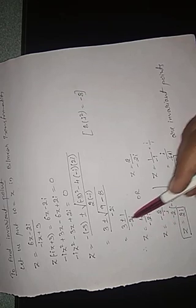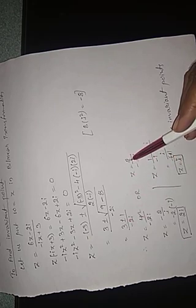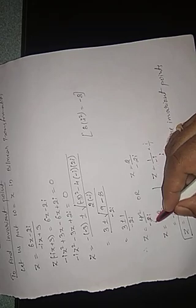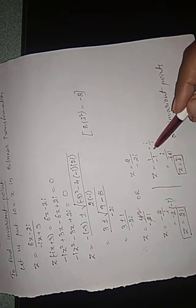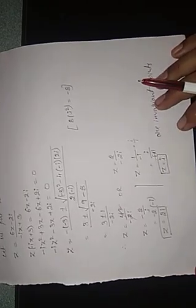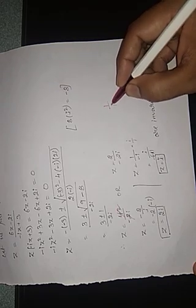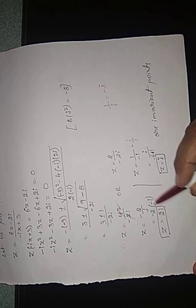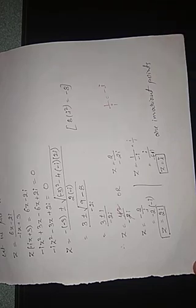Since i squared equals minus 1, the discriminant becomes 9 minus 8 equals 1. Therefore z equals 3 plus or minus 1, divided by 2i. Taking plus: z equals 4 divided by 2i equals 2 divided by i. Since 1 divided by i equals minus i, this gives z equal to 2i. Taking minus: z equals 2 divided by 2i equals 1 divided by i equals minus i... giving z equal to i. These two invariant points are z equal to i and z equal to 2i, which can be verified from the original problem since i maps to i.